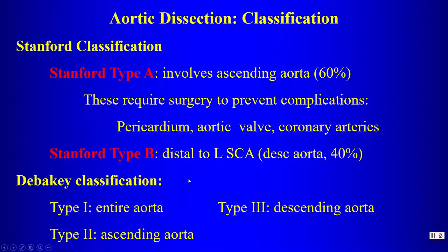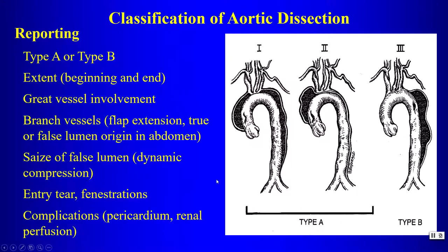Stanford Type B dissections were originally defined as dissections distal to the left subclavian artery involving the descending thoracic aorta. In the DeBakey classification, Type 2 involves the ascending aorta, Type 3 the descending aorta, and Type 1 the entire aorta.